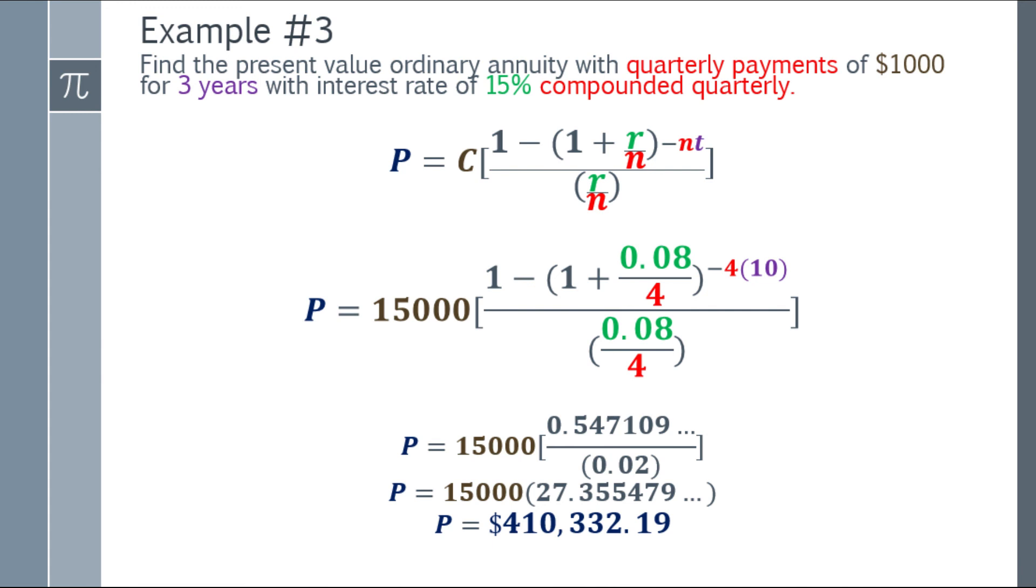For the question to find the present value ordinary annuity with quarterly payments of $15,000 for 10 years with interest rate 8% compounded quarterly, the answer is $410,332.19.